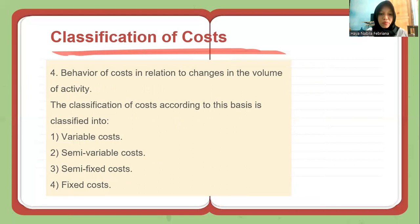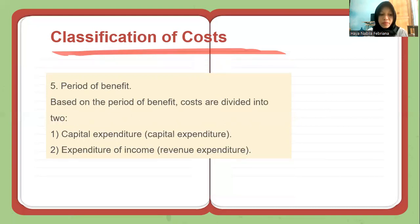The fourth is the behavior of costs in relation to changes in the volume of activity, classified into variable costs, semi-variable costs, semi-fixed costs, and fixed costs. The fifth is the period of benefit, where costs are divided into capital expenditure and revenue expenditure.